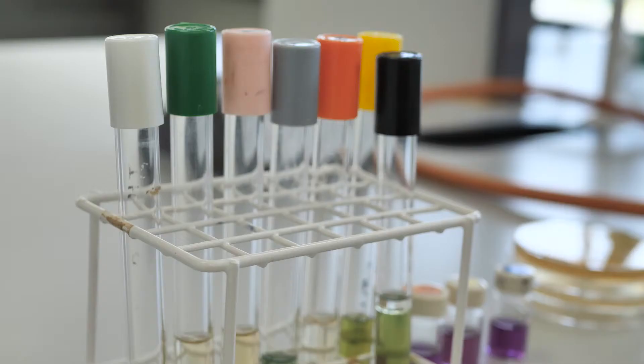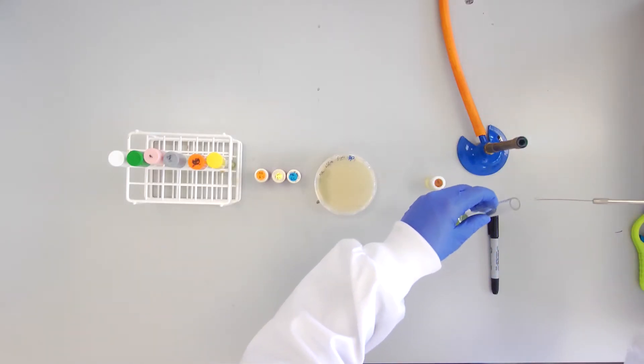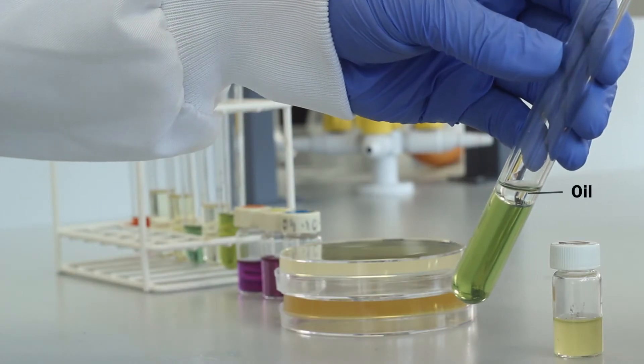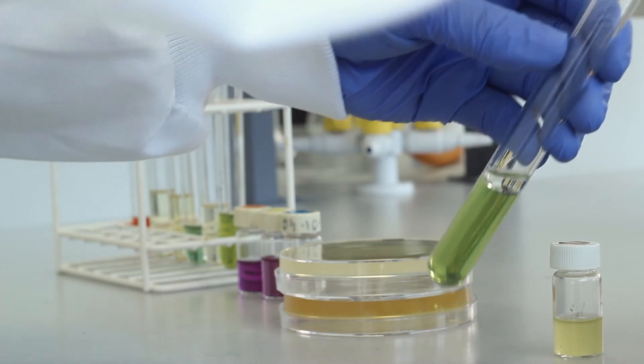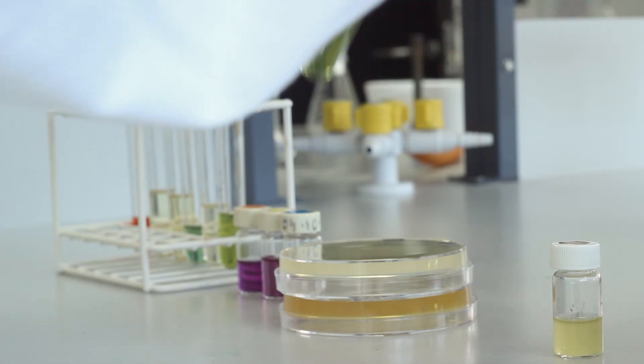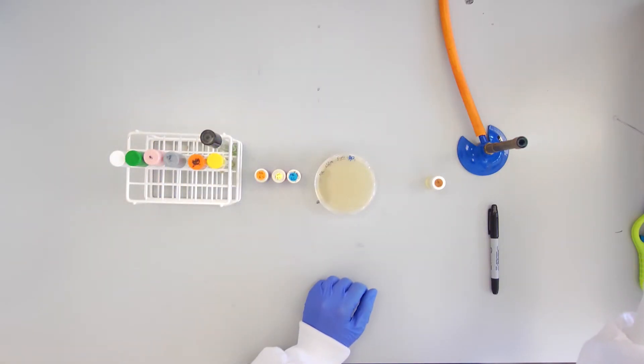Be particularly careful when flaming the loop after inoculating the Hugh-Leifson's test containing oil. Use a part of the flame higher than you normally would use for flaming, that is cooler, as the oil can sizzle and spit.